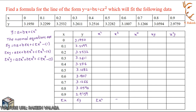The x² values are: 0² = 0, 0.1² = 0.01, 0.2² = 0.04, 0.3² = 0.09, 0.4² = 0.16, 0.5² = 0.25, 0.6² = 0.36, 0.7² = 0.49, 0.8² = 0.64, 0.9² = 0.81.